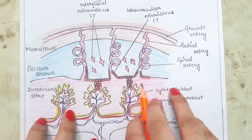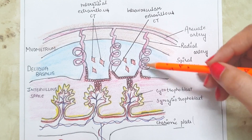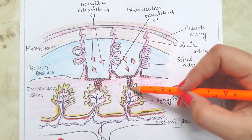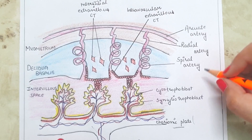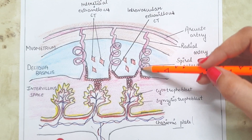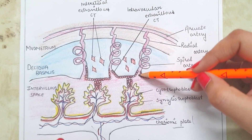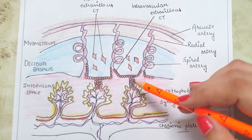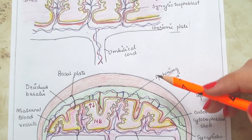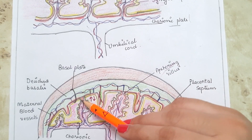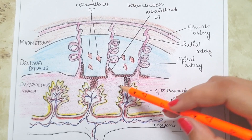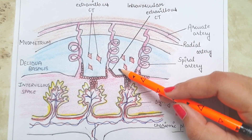During pregnancy, remodeling of the spiral arteries occurs: cytotrophoblast cells replace the vascular endothelium and smooth muscle, resulting in less resistance offered by the spiral arteries to blood flow and thus more blood flowing to the placenta. The cytotrophoblast cells are later lined by syncytiotrophoblast cells, forming anchoring villi, which attach the placenta to the decidua basalis.